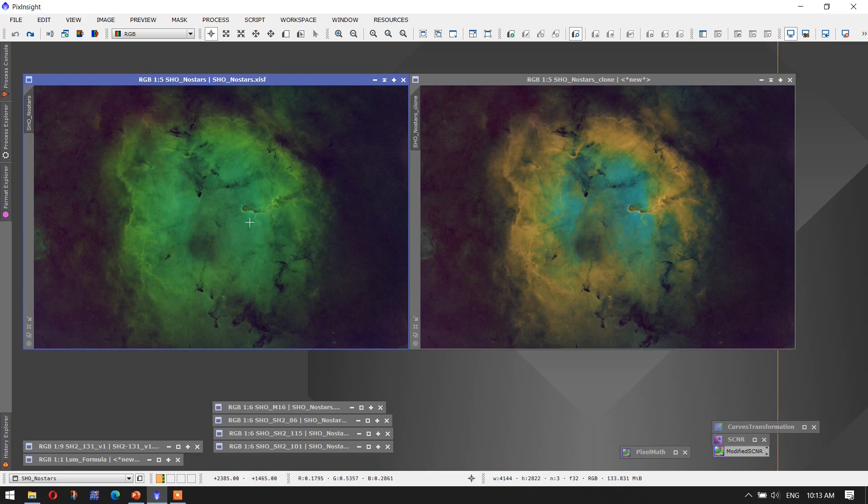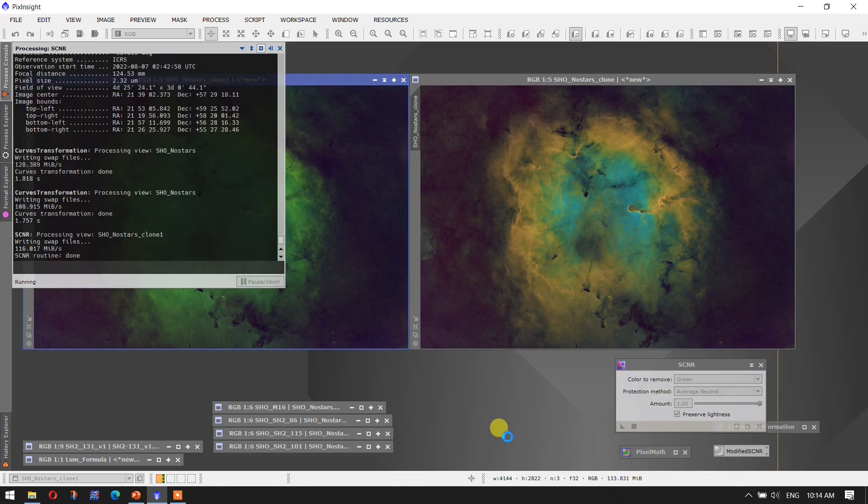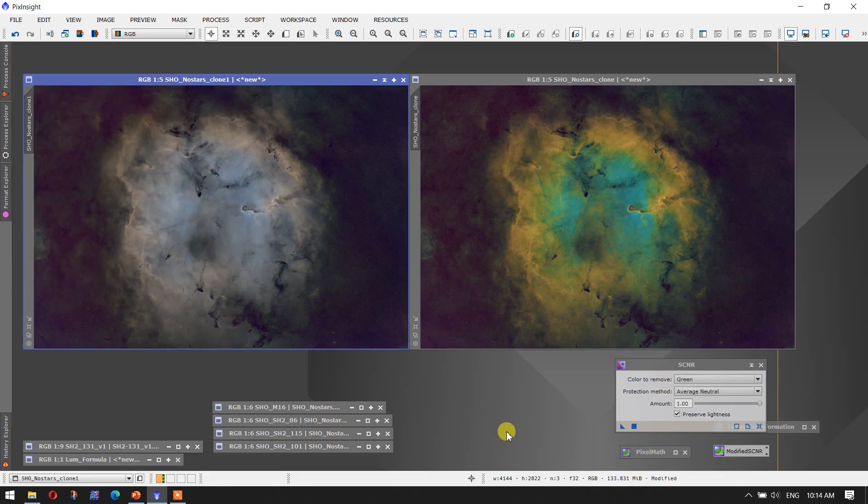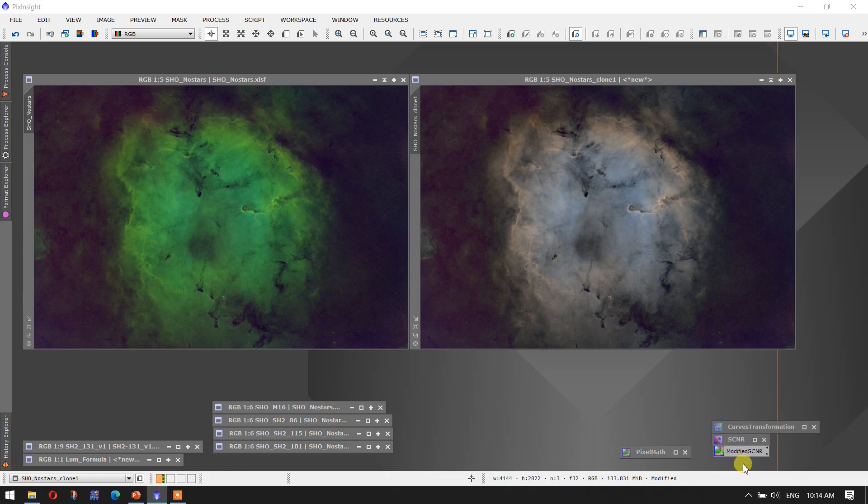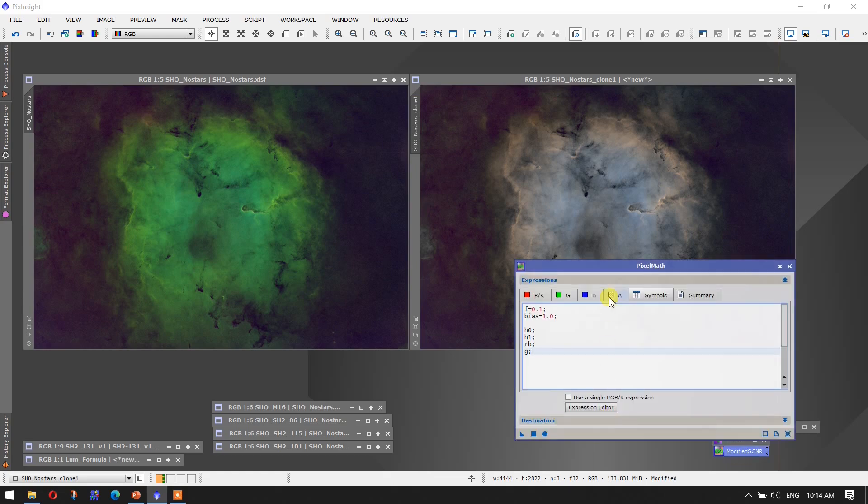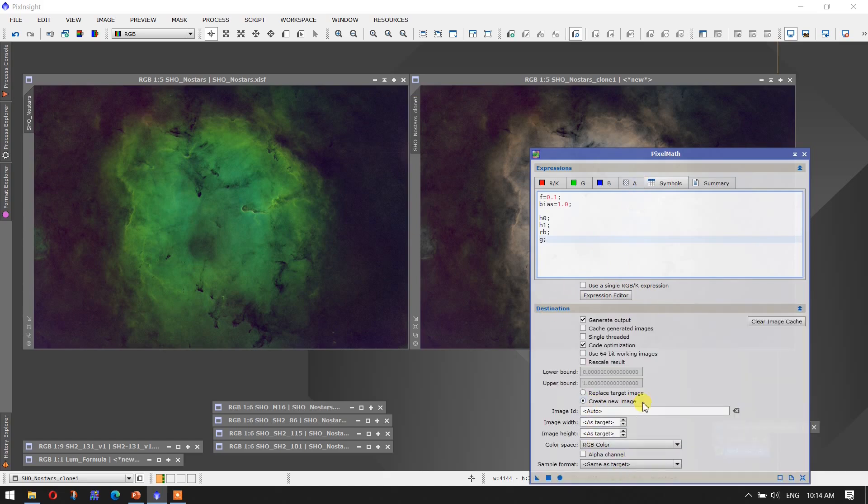Now let's see what we would get if we use the SCNR tools. I'm going to make a clone of that and bring up SCNR. I've got it set to average neutral, I've got it set to green of course, and I've got the full maximum level here to pull out as much green as it's going to. Let's go ahead and apply that to this clone image, and you can see it's a bit more of a muted picture here. So let's set that aside as our standard SCNR approach.